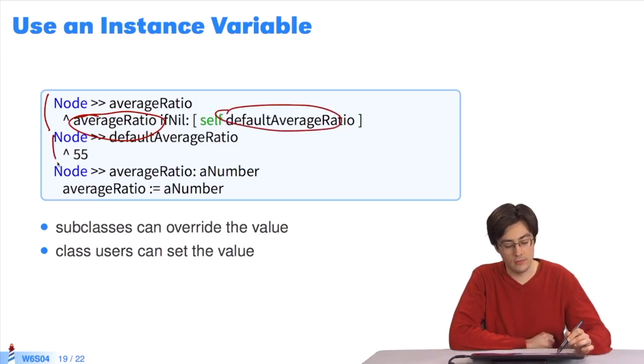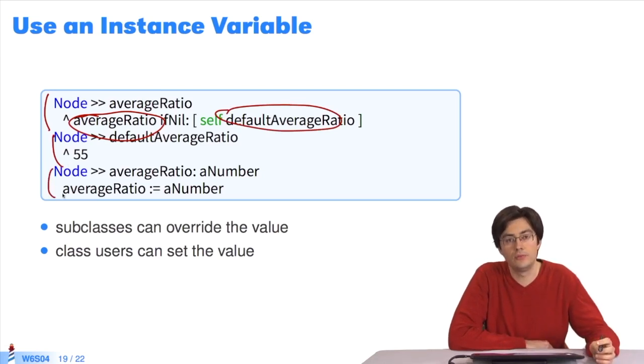If not, it returns the default value. The default value was 55. And the users of a node object can program whatever value they like inside.